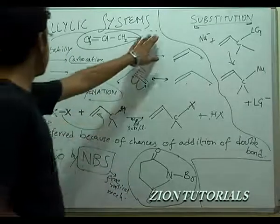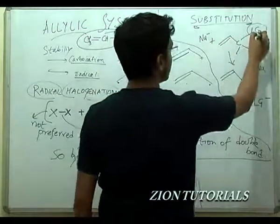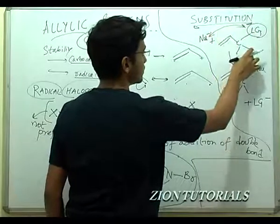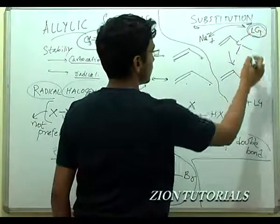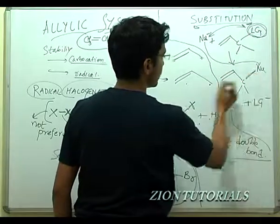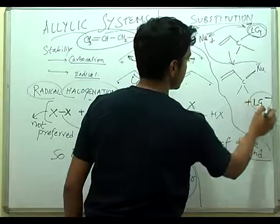One more important reaction is nucleophilic substitution. In this, we have a leaving group and a nucleophile. It just replaces or substitutes the leaving group. And thus the nucleophile comes here at this position without affecting the double bond, and the leaving group remains as a counterion.